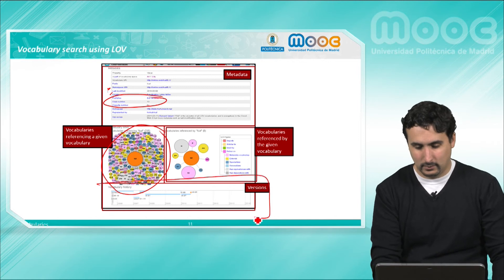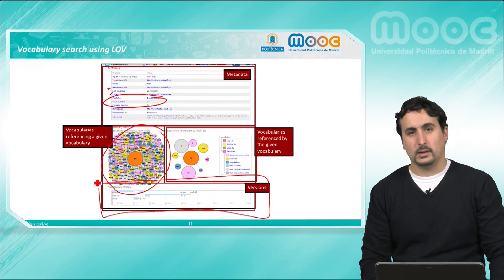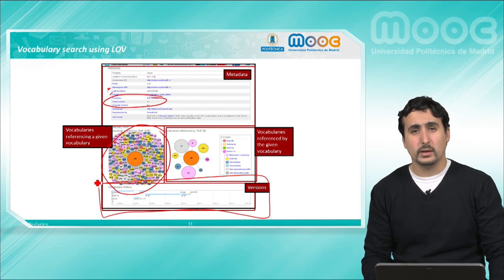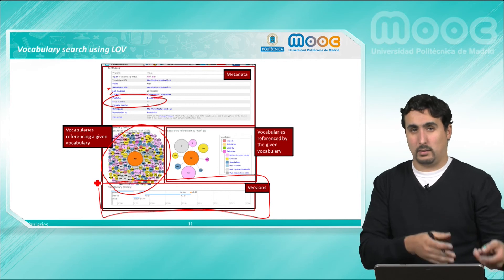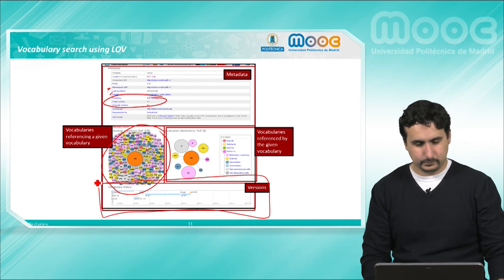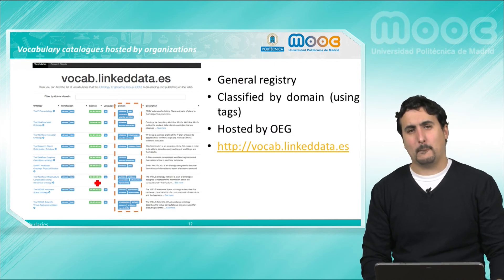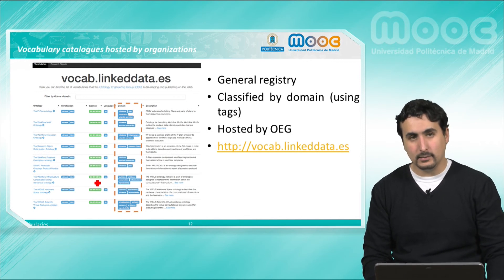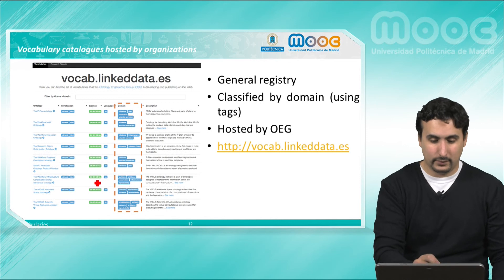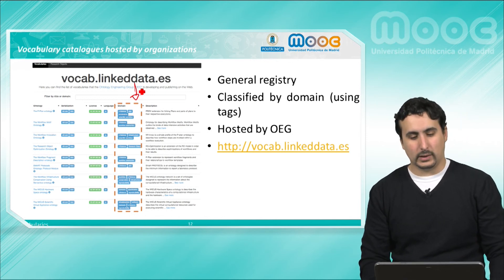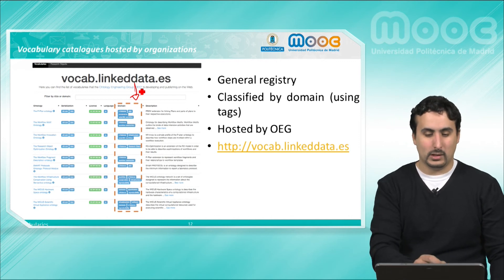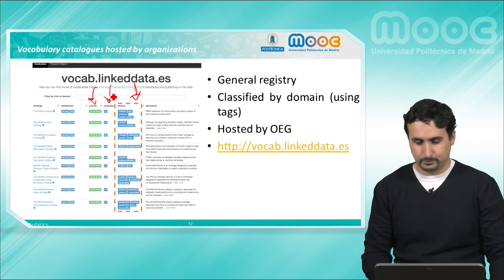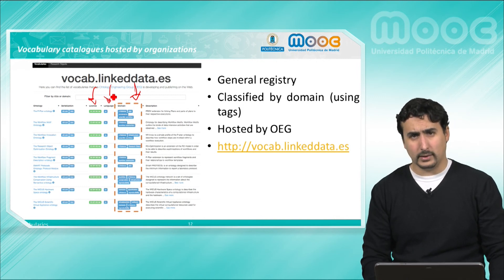Finally, we have historical information about the evolution and versions of the vocabulary. This information is really useful when we want to know how popular a vocabulary is and how useful it is for our dataset. As well, we will have vocabulary catalogs hosted by organizations. In this case, we have vocablindata.es, which is a general registry in which vocabularies are classified based on the domain. We have here tags for the domain the vocabularies cover, as well as information about the license and their language. It is hosted by the Ontological Engineering Group and you can access it at its URL.